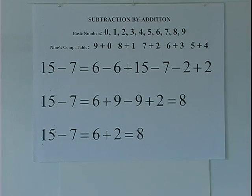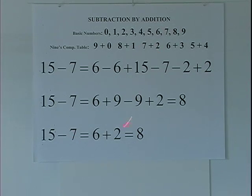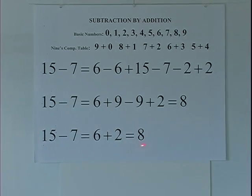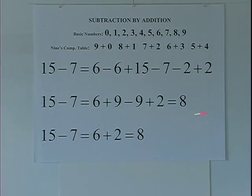Now we'll state our algorithm. The algorithm for subtraction by addition: add the digits of the minuend — one and five — to get six. Take the nine's complement of the subtrahend, which is two, and add it to six. Six plus two equals eight. Using this algorithm I did only one operation versus four for subtraction by subtraction.